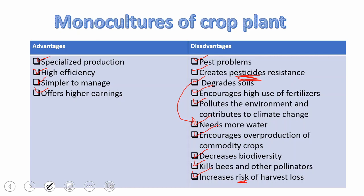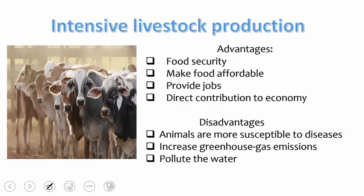Now let's move to intensive livestock production. Thousands or millions of animals are raised in small places. Like monoculture of crops, it has advantages and disadvantages. The biggest advantage is food security — it provides food consistently so we are not afraid of shortages. Producing livestock in massive amounts makes it affordable and cheap for people. These factories also provide jobs, contributing directly to the economy.